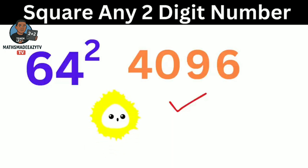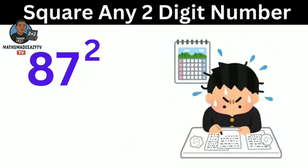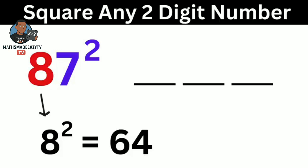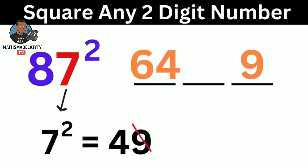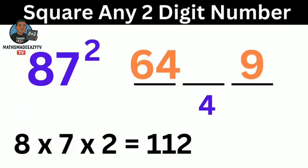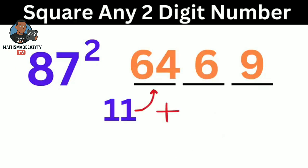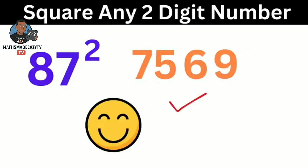Lastly, let us consider another larger example: 87 raised to power 2. We divide it into 3 parts. We square the 8, which gives us 64. We write 64 here. For 7 square, we have 49. We write 9 and carry 4. Now we multiply 8 by 7 by the power, which is 2, giving us 112. We add the 4 to it, giving us 116. We write 6 in the middle and carry 11. When we add 11 to 64, it gives us 75. The answer is 7,569.